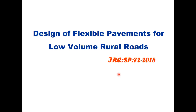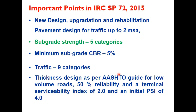Today we are going to discuss design of flexible pavements for low volume rural roads as given in IRC SP 72:2015. Low volume roads as defined in this code are those where design traffic for a design life of 10 years does not exceed 2 MSA. This code is a revised version of 2007 guidelines and includes the procedure for design of new roads as well as for accreditation and rehabilitation, and pavement design is included up to 2 MSA.